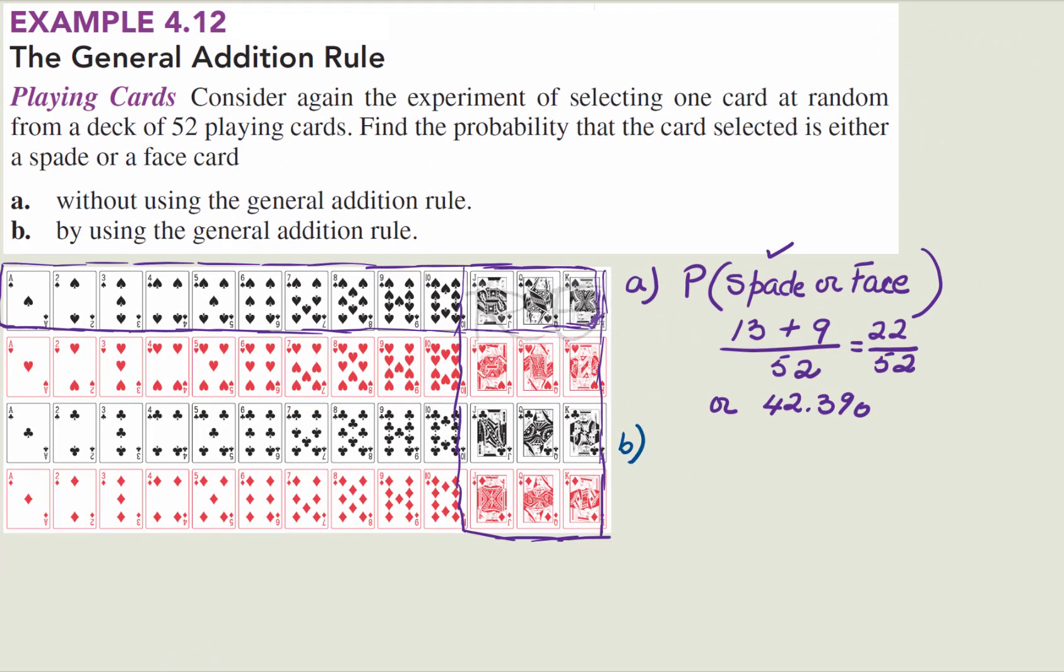Now with the General Addition Rule, P of S or F, spades or face, is equal to P of S plus P of F minus the intersection, P of S and F.